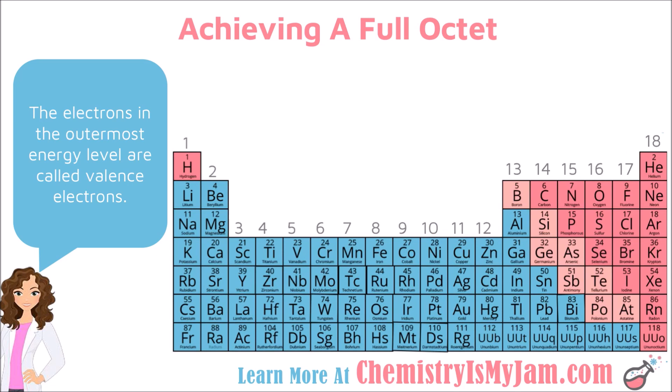If your periodic table is numbered the way mine is, you can look at the group number at the top of the column, take off the first digit, and you'll have the number of valence electrons. For example, nitrogen is in group 15 — take off the 1 — it has 5 valence electrons.